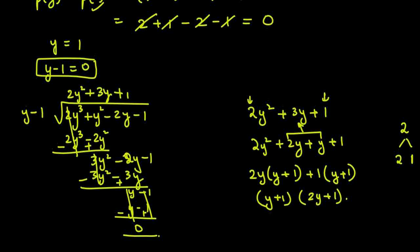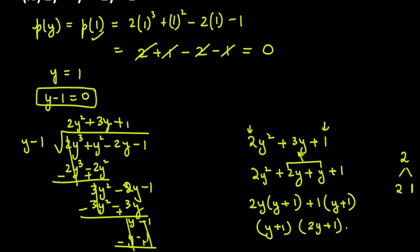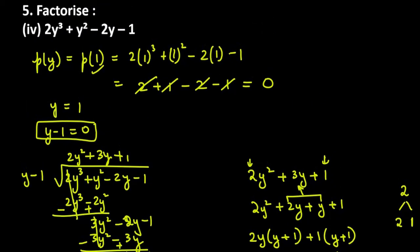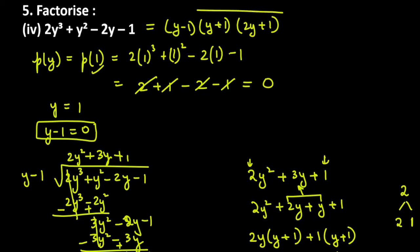So our three factors are: y minus 1, y plus 1, and 2y plus 1. The final answer for the last part is (y minus 1)(y plus 1)(2y plus 1). That's the answer for the last part.